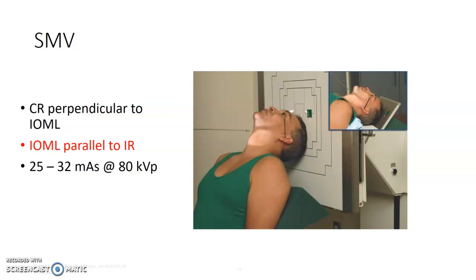The central ray for the SMV is midway between the zygomatic arches, about an inch and a half inferior to the mandibular symphysis.